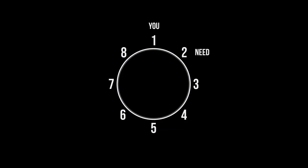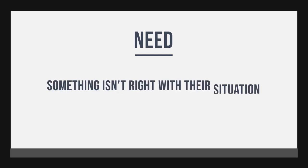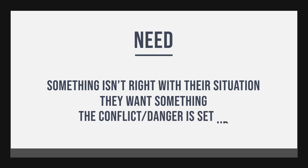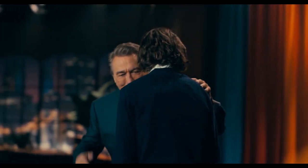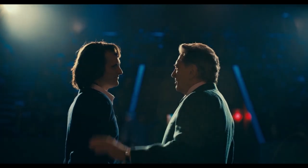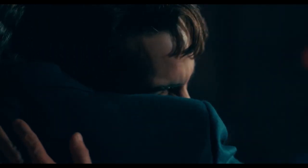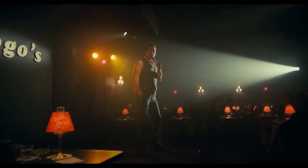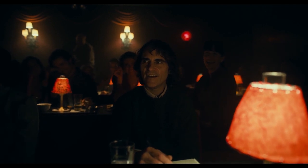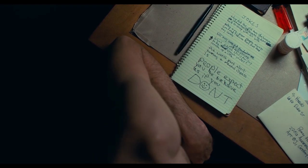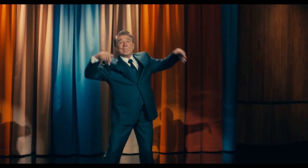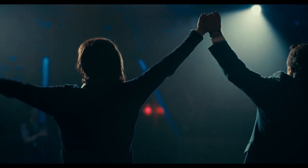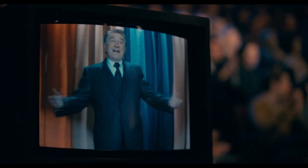Moving across to number two is 'need' — there's something not quite right with the protagonist's situation. The protagonist wants something, and we set up the potential danger or conflict in our story. Arthur wants to be loved. It's clear that his feelings of neglect stem from a lack of a father figure, and he's looking in some small way to replace the love he never received from an absent father. Arthur hopes that his desire to entertain will earn him adoration. He's a professional clown and a wannabe stand-up comedian — a way to fill the void in his heart, which is little by little being filled instead by frustration and anger. His hero, late night talk show host Murray Franklin, is his surrogate father figure and maybe the inspiration behind his desire to start a stand-up career.